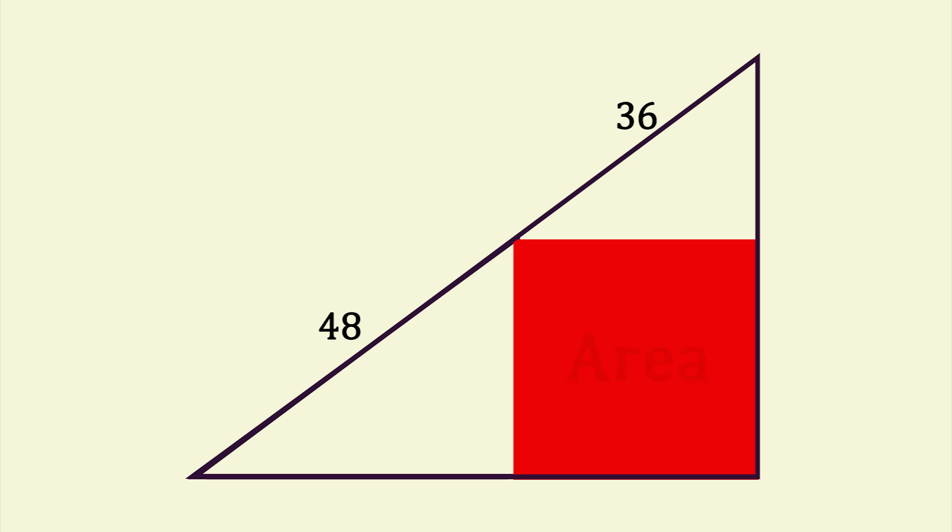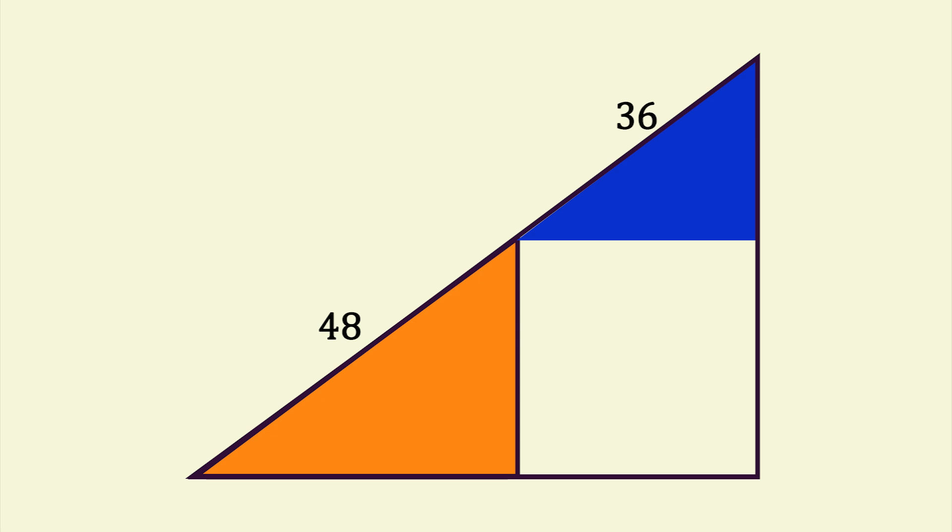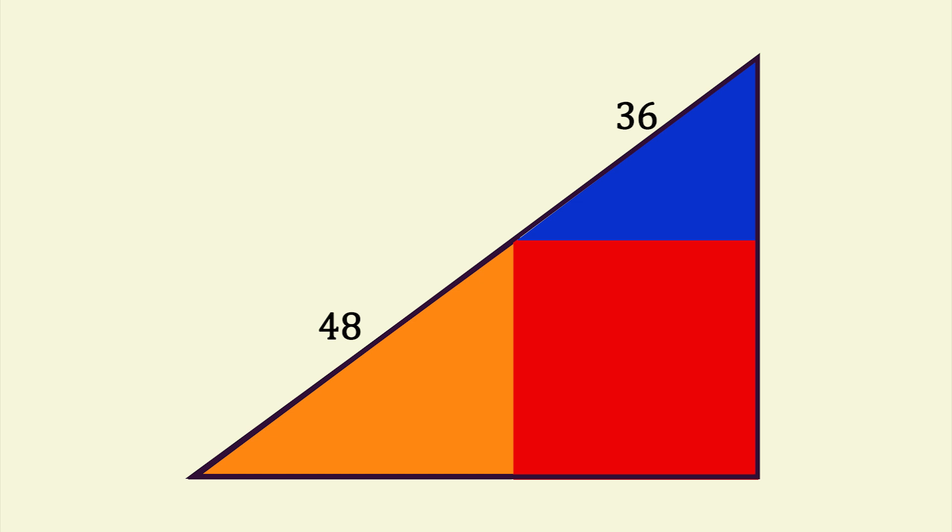As you can see, the only given numbers are the two parts of the large triangle's hypotenuse. The orange side is 48, and the blue side is 36. We need to find the area of the square.